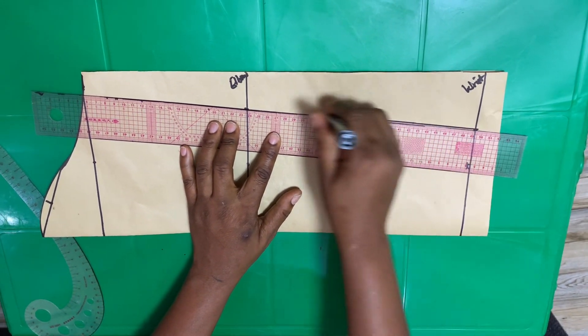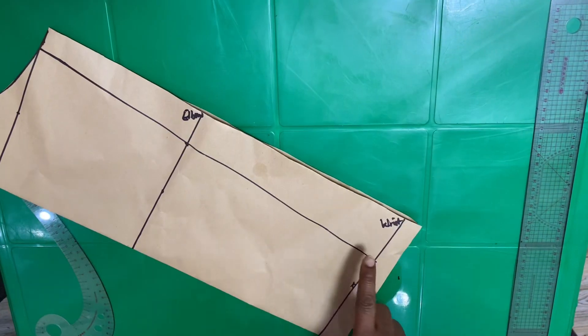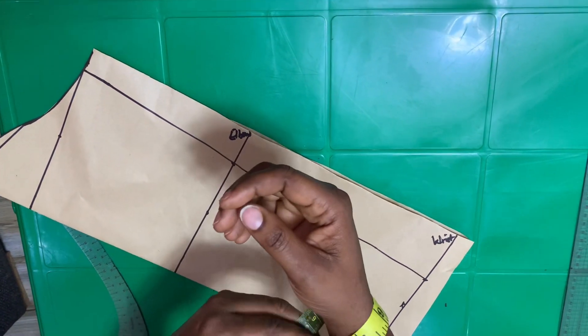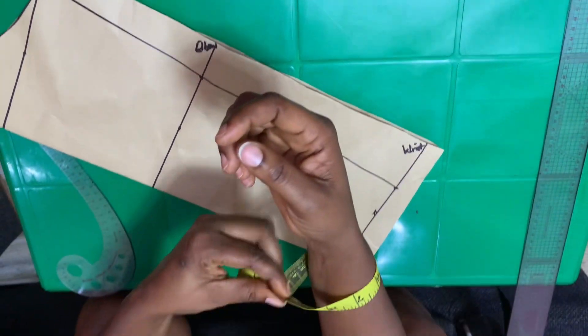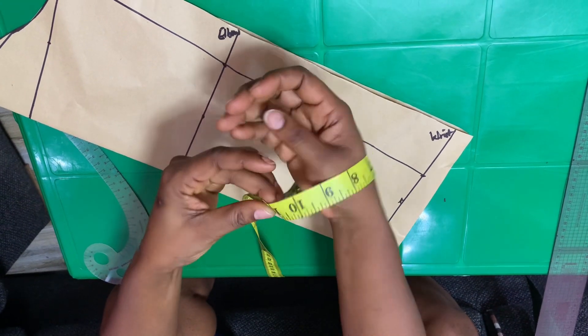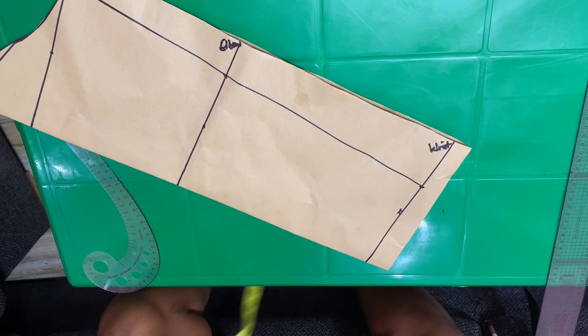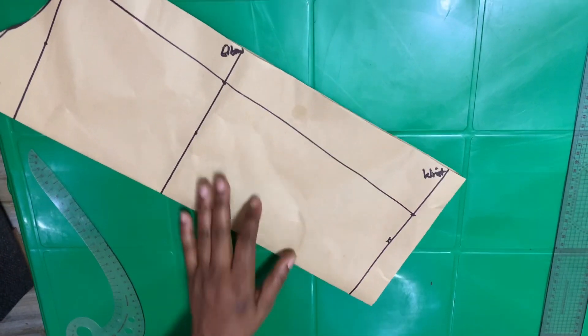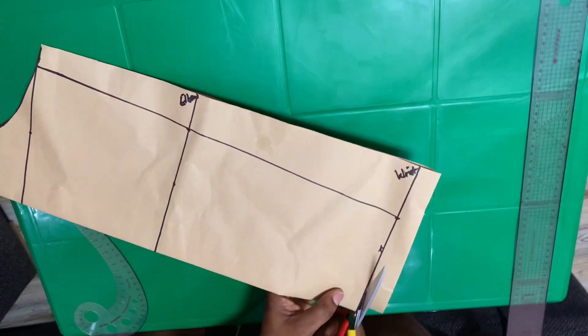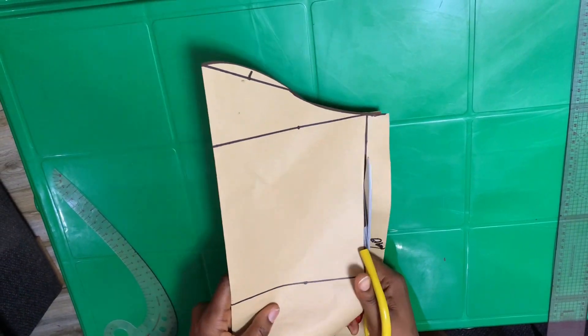After I join all these points, I will show you one more thing. Remember I said no allowance yet. If you want to learn how to take accurate wrist measurements, make sure your hand can pass through freely. If your hand passes through freely, it's the correct measurement.